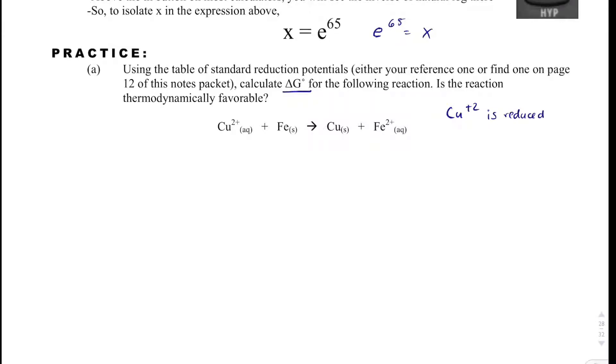And if I look at my standard reduction potential table, the cathode is 0.34 volts, and the anode is negative 0.44 volts, and so E cell is equal to E cathode minus E anode, and no one tells us that this is a galvanic cell, so we don't know if it's thermodynamically favorable.